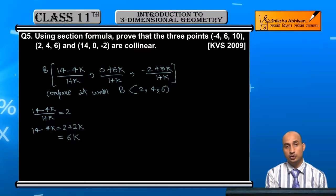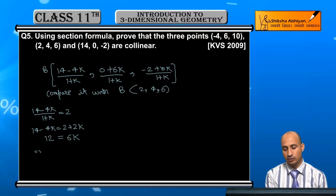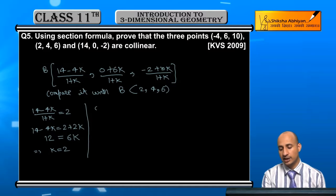And 2 I take to the other side, so 14 minus 2 is 12. So from here k's value is k is equal to 2. Now if you compare the y coordinates.